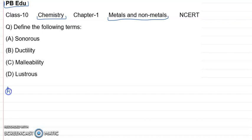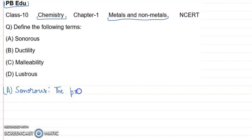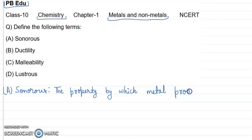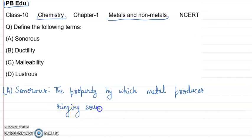The first term is sonorous. Sonorous is the property by which metal produces a ringing sound — this property is called sonorous.